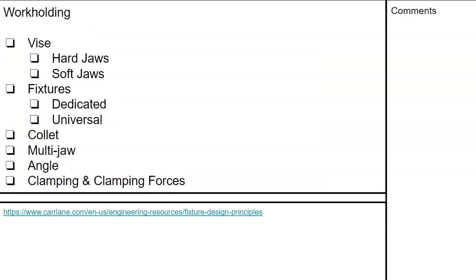Workholding: we'll look at vises, hard jaws, soft jaws, dedicated fixtures versus universal, and collets. Carlene is a good resource for a lot of the fixturing, and the Fixture Design Principles is a nice one to check out.